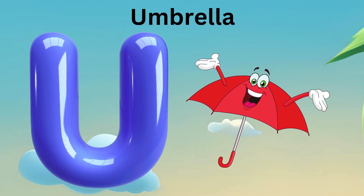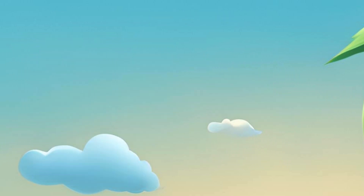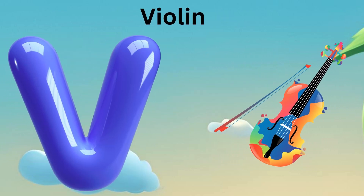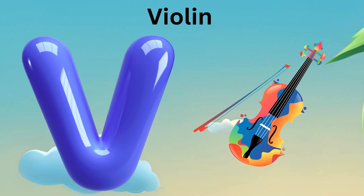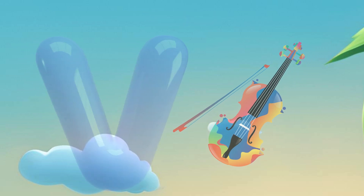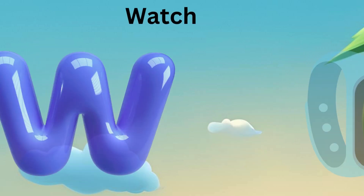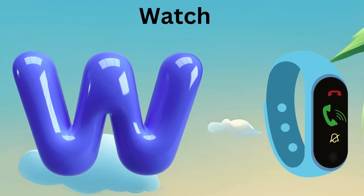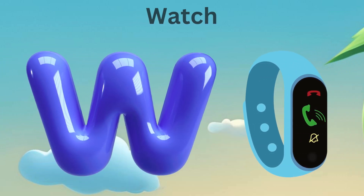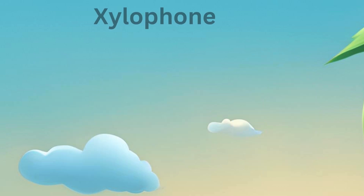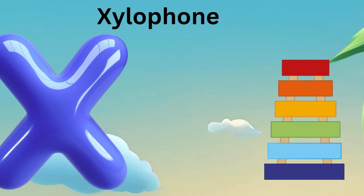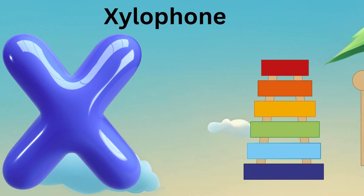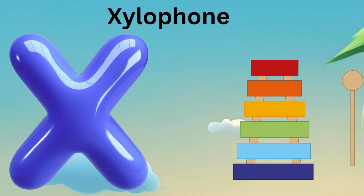U is for Unicorn, U-U-Unicorn. V is for Vulture, V-V-Vulture. W is for Watch, W-W-Watch. X is for Xylophone, X-X-Xylophone.